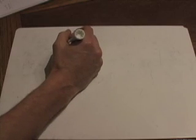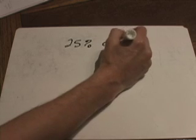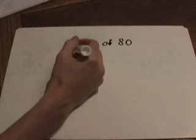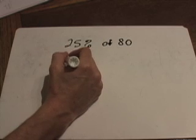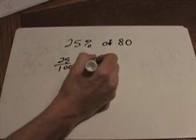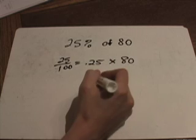Let's try a couple more. They don't really get any harder than that — the multiplication gets a little harder but you do the same thing every time. What if we want to find 25 percent of 80? Well, 25 percent again means 25 out of a hundred, which is the same thing as 25 hundredths.